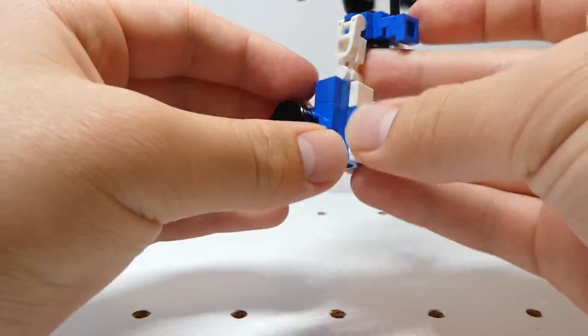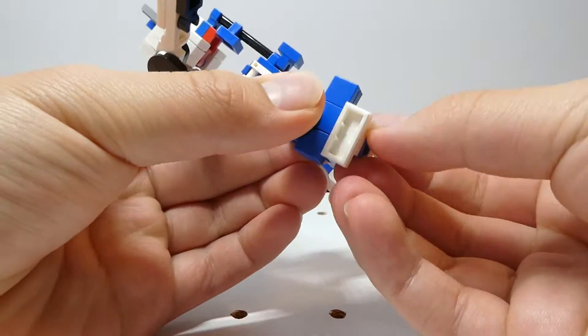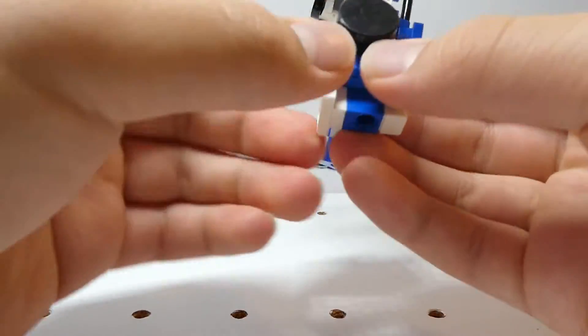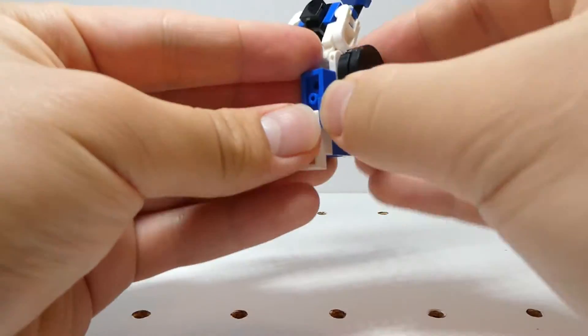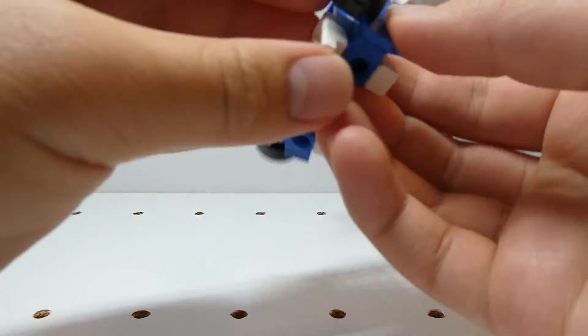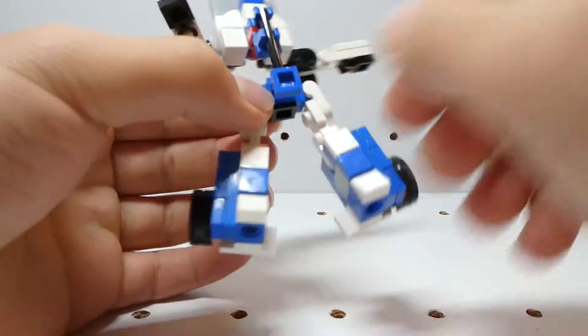So the other side is the same. Just rotate this, rotate the whole lower leg, rotate the spoiler, rotate the panel, and then rotate the spoiler back. And then there's two legs done.